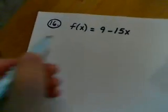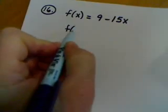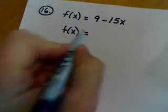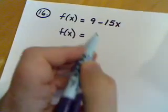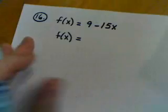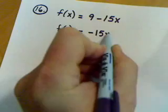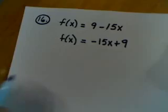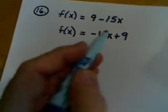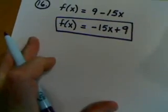Alright, here we go. Now, first thing I don't like about this function, it's not necessary always, but it's always a good idea to me to have it in the correct order. What I mean by that is, the x term should go in the front and the constant term should go in the back. So I'm going to rewrite this function as negative 15x plus 9. I just don't like the way it's written to start with. Let's put it in the correct order.